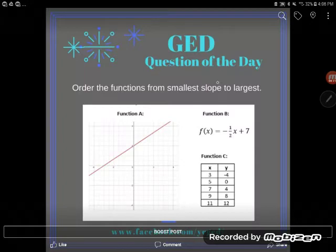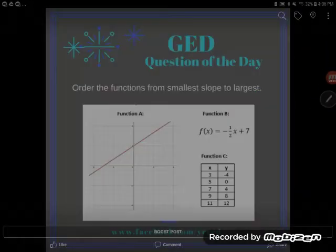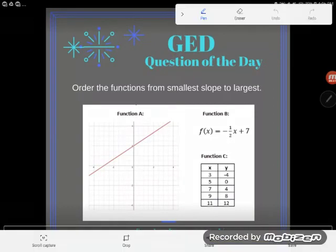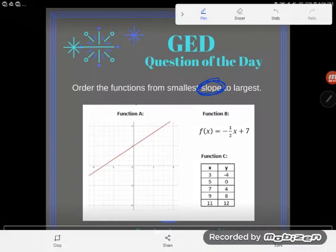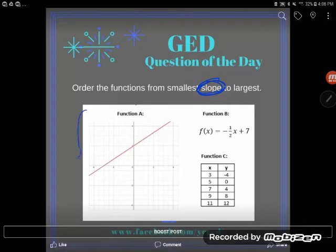We're being asked to compare slope, and that's not too hard of a thing to do except for here I have my slope in three different forms. I have my line presented to me in three different forms. Here I've been given the graph of a line.